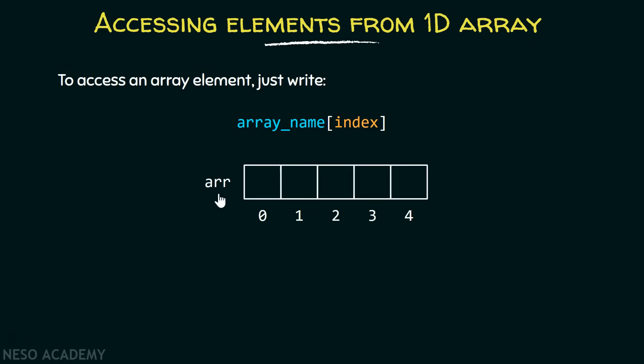Suppose you have an array of length equals to 5. Then as we know, index starts from 0, the last index of this array will be 4 because if length equals 5, then last index of the array must be 4. It's always length minus 1. So index starts from 0 and goes up to 4.